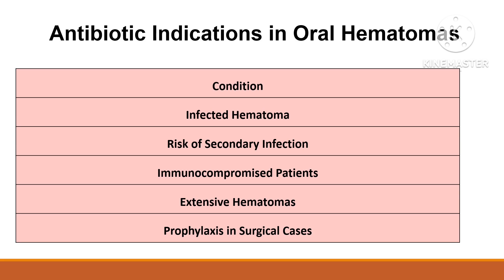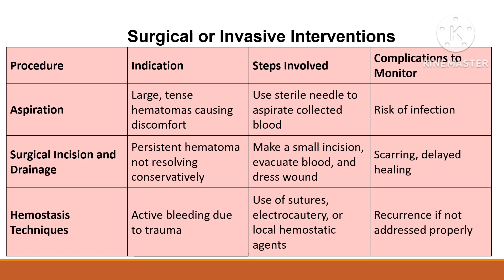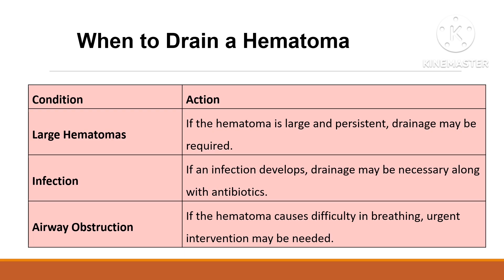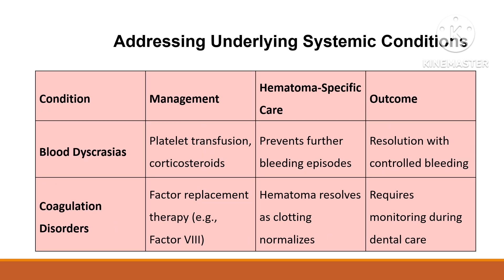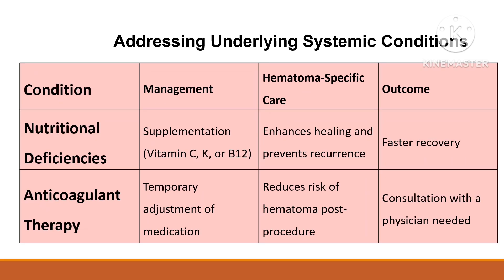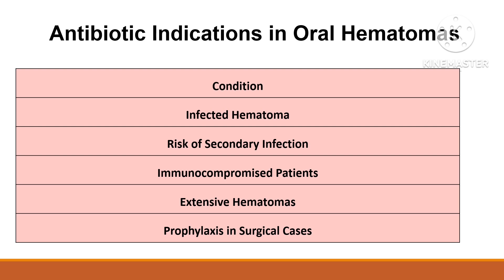For large or persistent hematomas that do not respond to conservative treatment, invasive interventions are considered. Aspiration using a sterile needle is a simple and effective procedure to evacuate collected blood. For cases where aspiration is insufficient, surgical incision and drainage may be necessary, creating a small incision to evacuate the hematoma, followed by dressing the wound. Hemostatic techniques such as sutures, electrocautery, or local hemostatic agents are used when active bleeding is present.